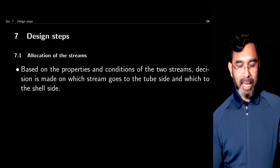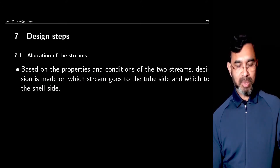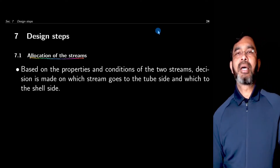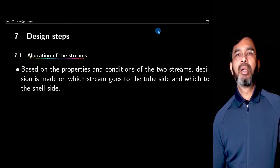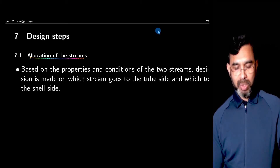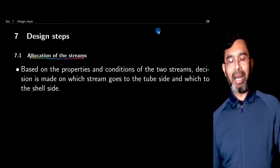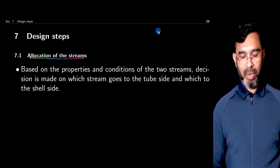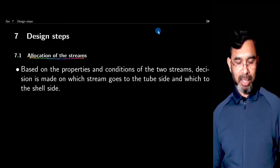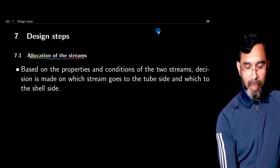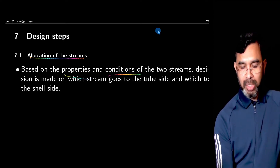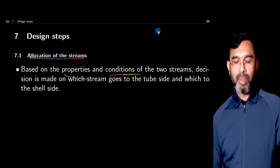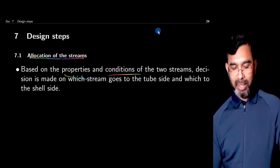Typically the designs are carried out in well-defined steps. First, you start with the allocation of the streams. For a double pipe heat exchanger, you decide which stream goes to the annulus and which goes to the inner pipe. For a shell and tube exchanger, you decide which stream goes to the shell side and which goes to the tube side. That all depends on the properties and conditions of the two streams. So the first step is to decide which stream goes to what side.